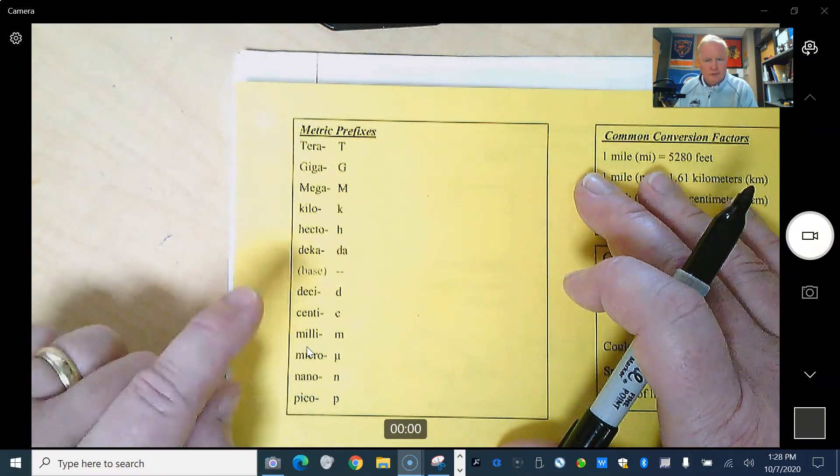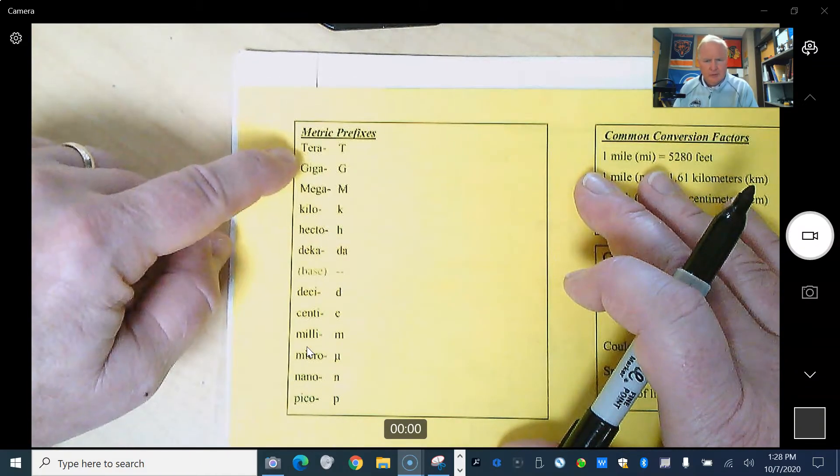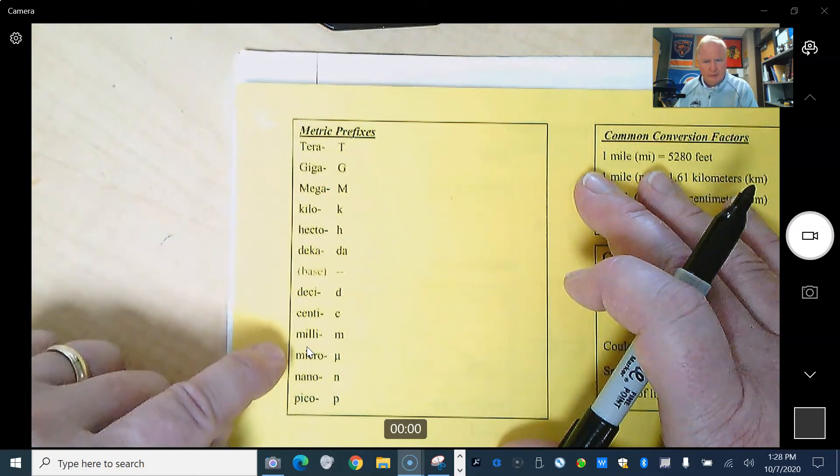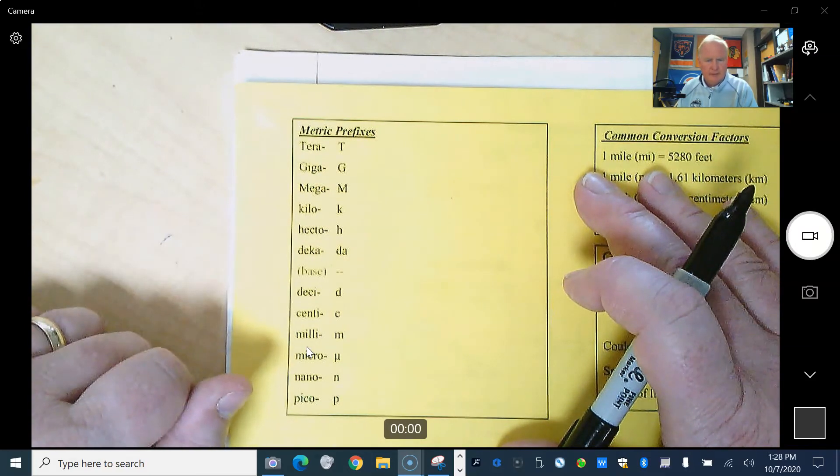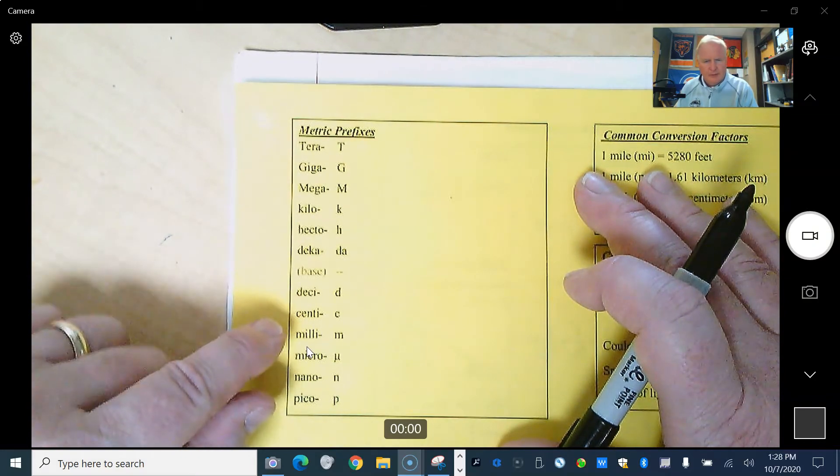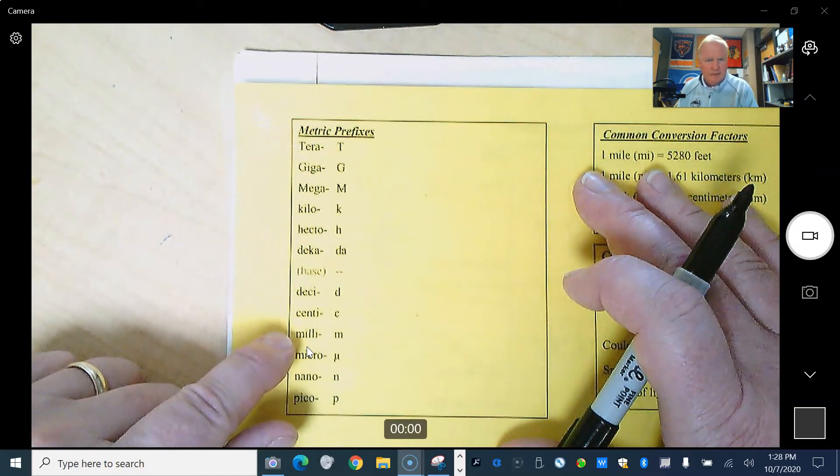The reason why we then do two steps is that if we are going from up here down below, well, then we're just going to stop at the base. And then we'll stop at the base, and then we'll go down. Our system works. And if we are here, let's say we're going to go from centi to milli, well, then what we're going to need to do is jump up to the base, and then jump back down to milli.